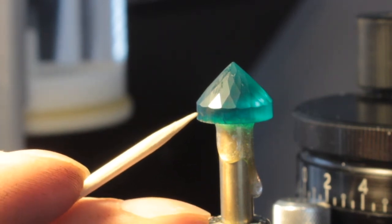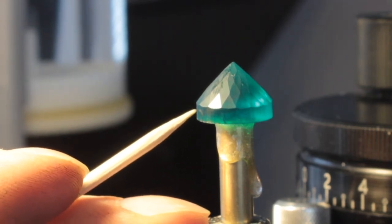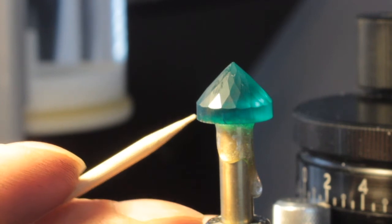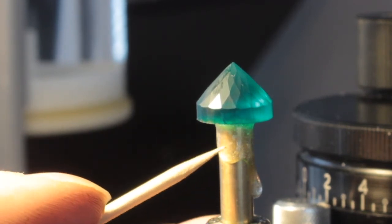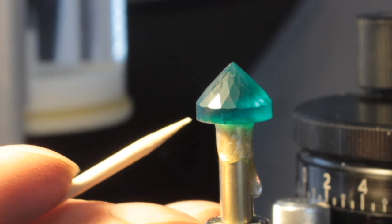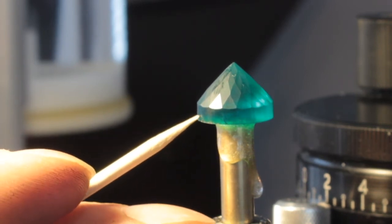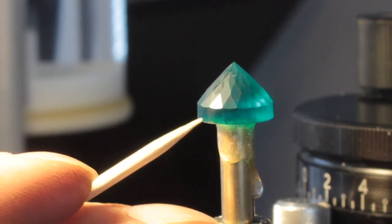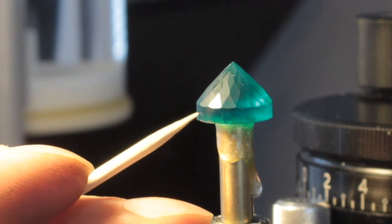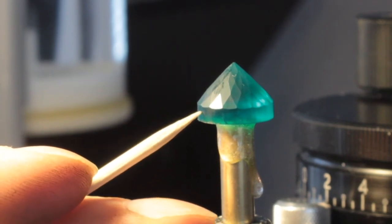So I would say don't worry about the girdle facets doing 48 of them. Do every three of them. So it's every six tooth instead of every other tooth until you get to the finer laps. That way you don't waste time on the girdle. 48 facets is a lot of facets.